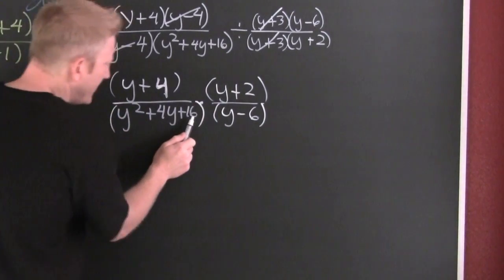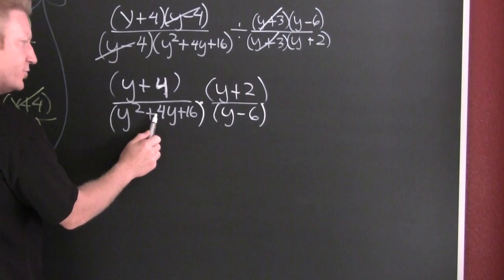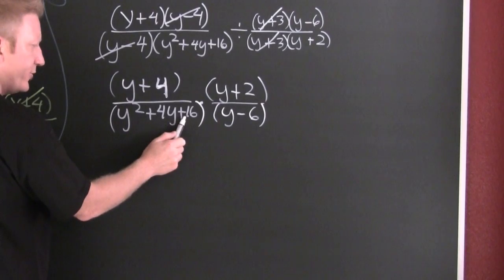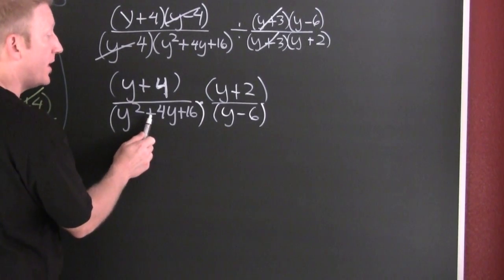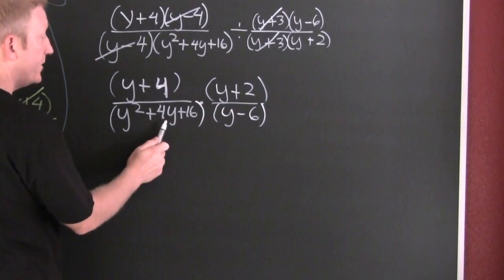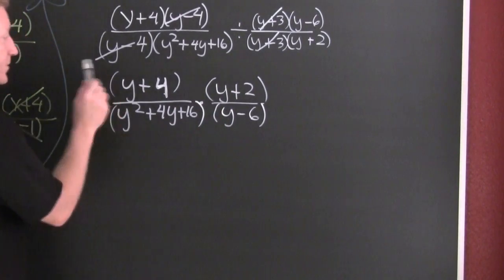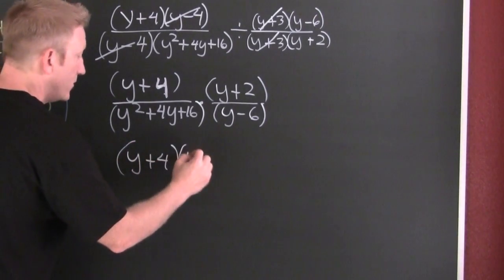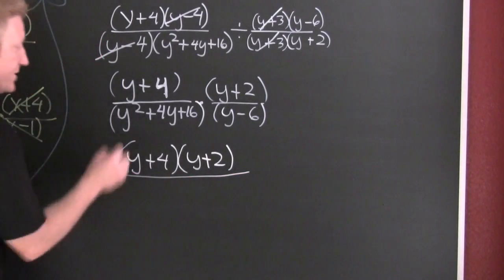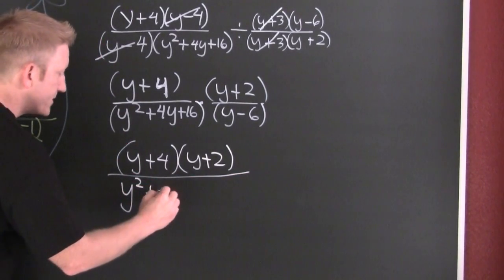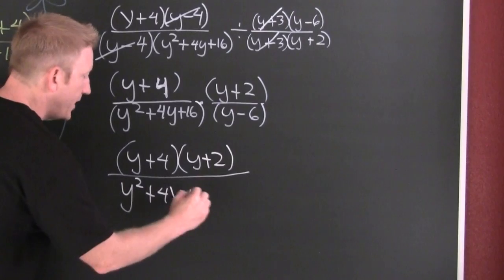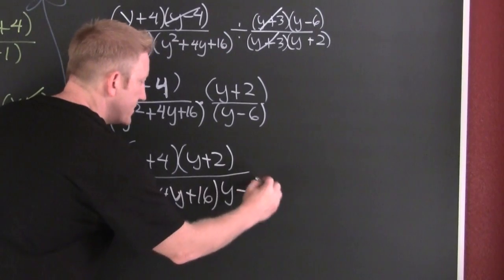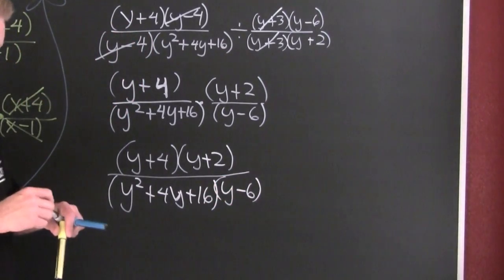Can that factor? Factors of 16 that add to be 4? One and sixteen — no, that's 17. Two and eight — that's 10. Four and four — that's 8. That's prime. Can I reduce here? No. Can I reduce here? No. So now multiply straight across: y plus four times y plus two, divided by y squared plus 4y plus 16, times y minus six.